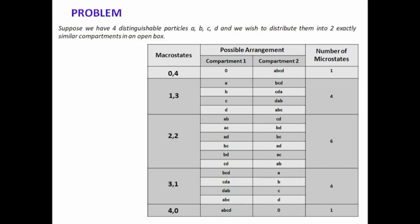So what are the possibilities? For one case, in compartment 1 there is no particle, and in compartment 2 all the particles are present — that means a, b, c, d. So the macrostate will be (0, 4) and the number of microstates will be 1, because there is only one possibility.